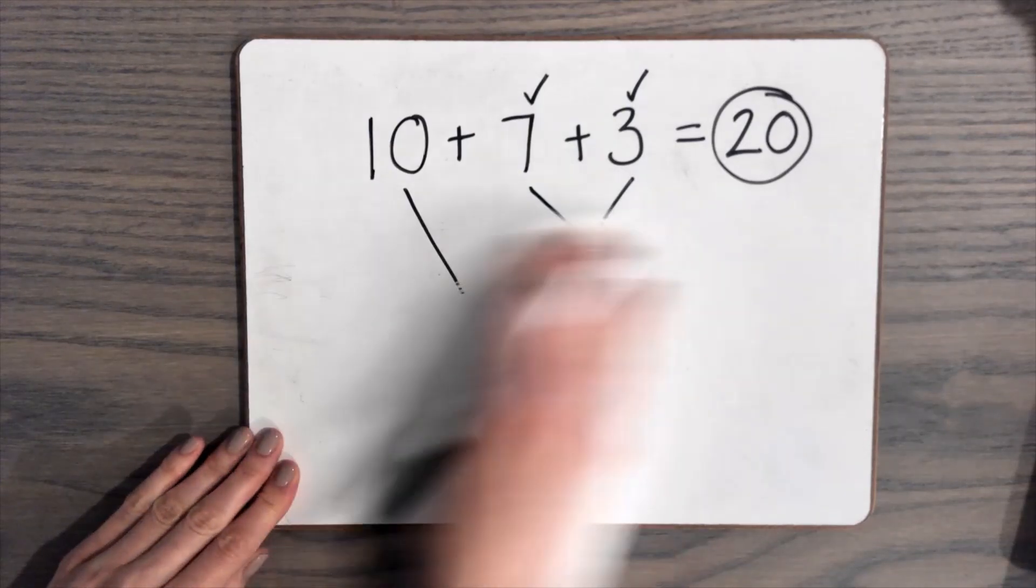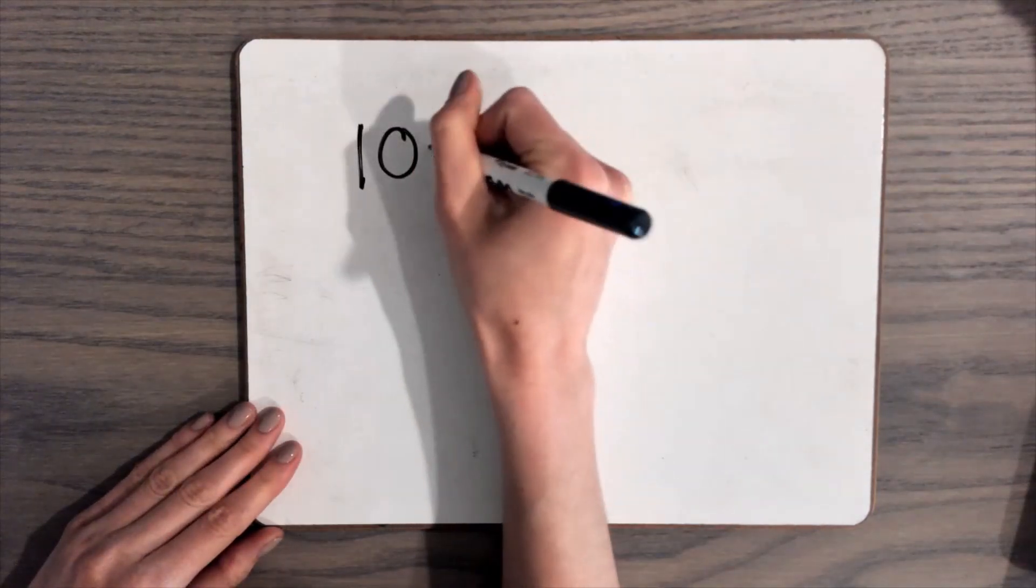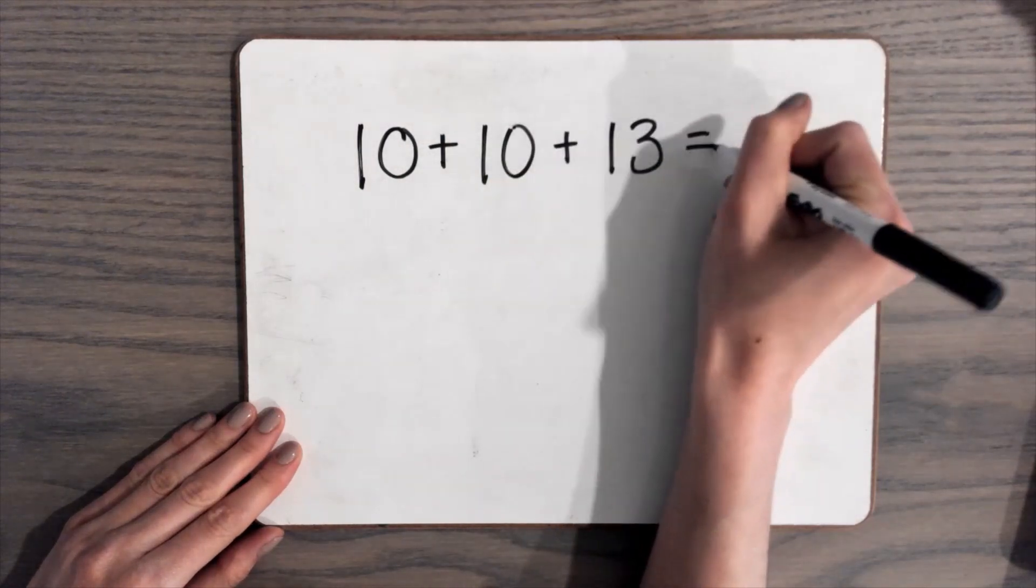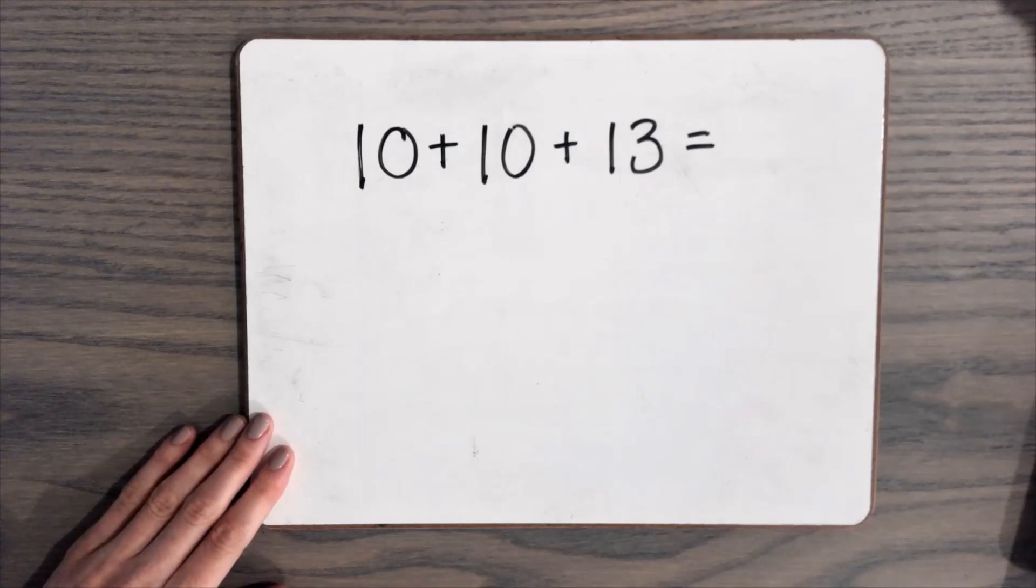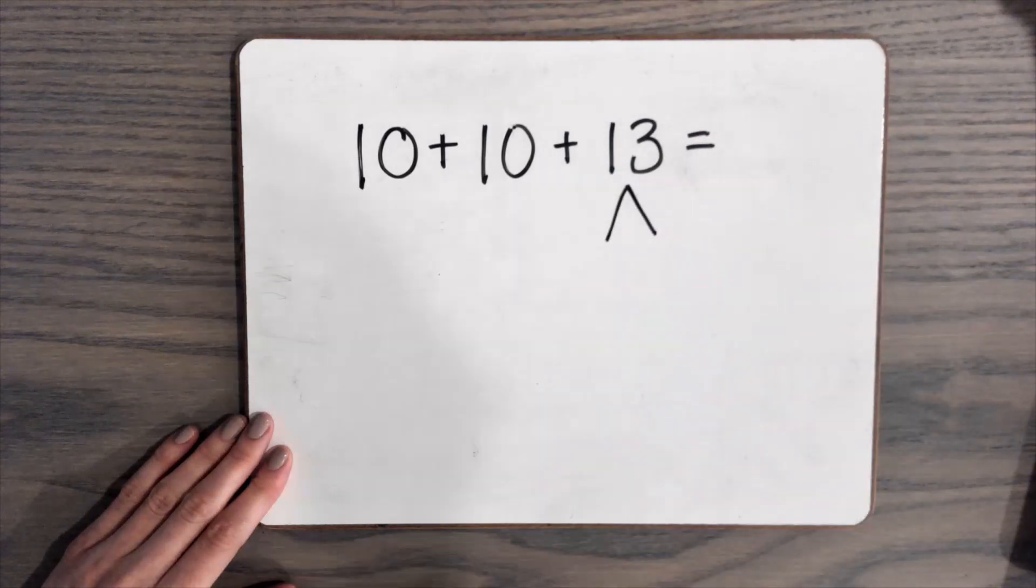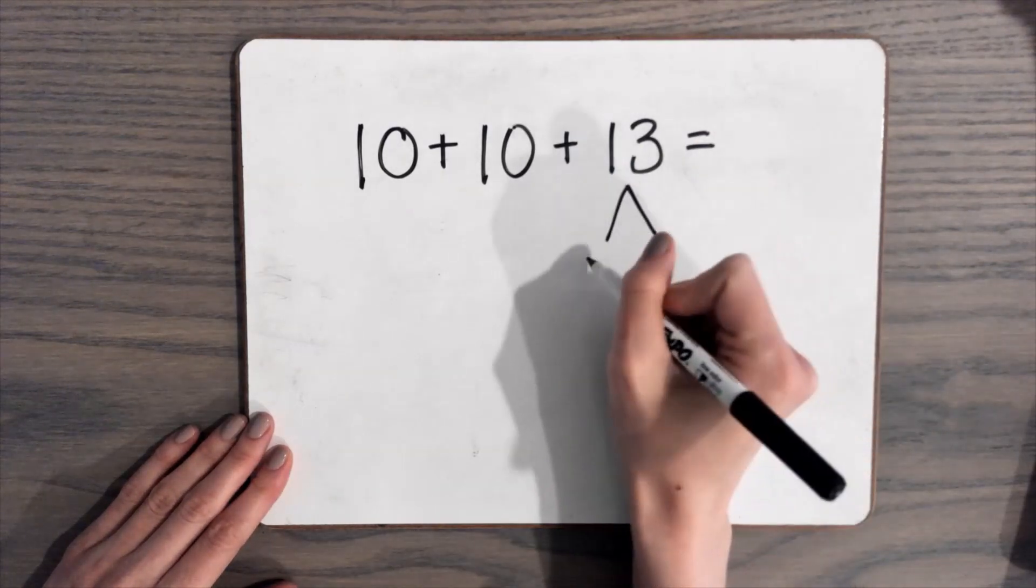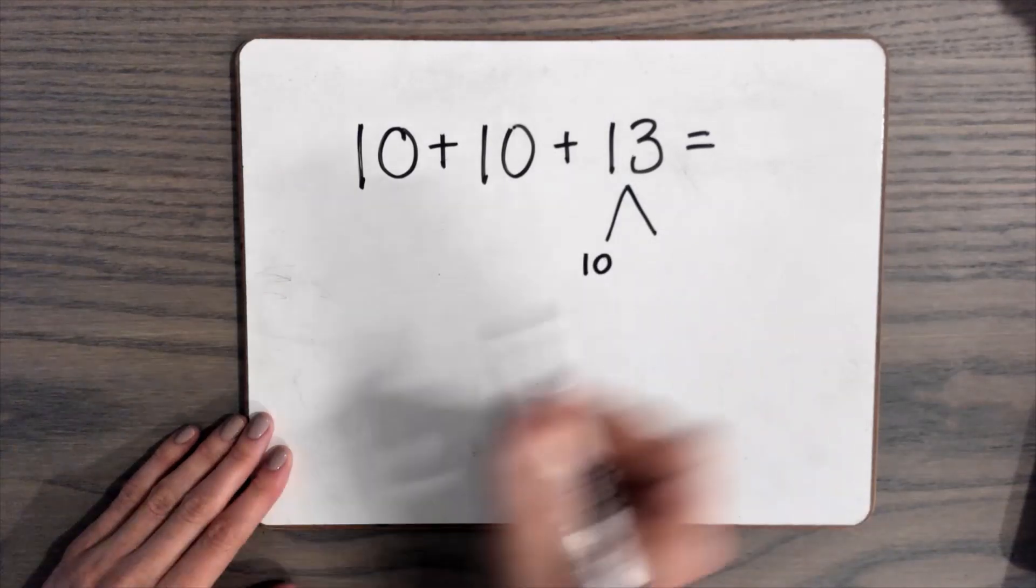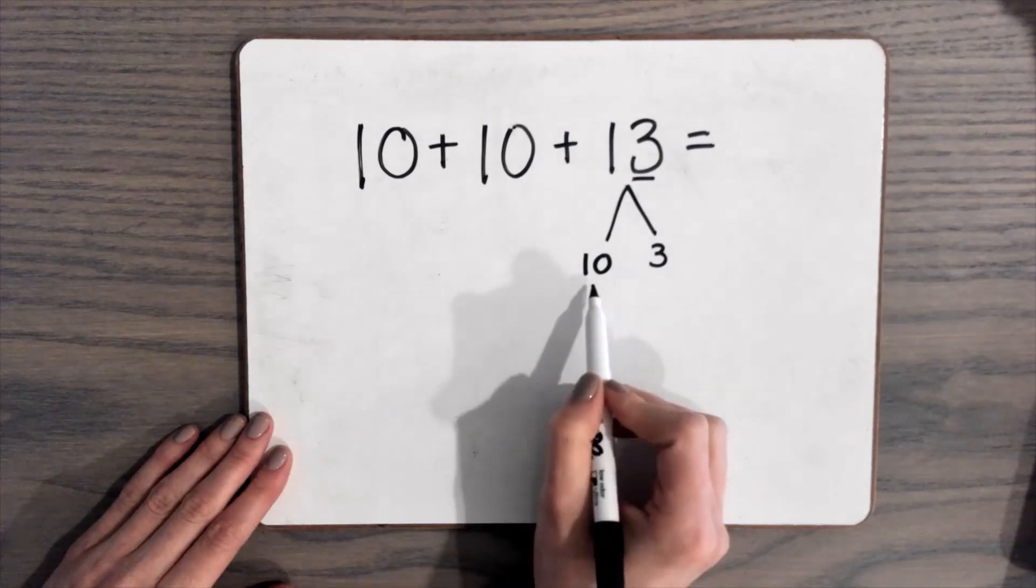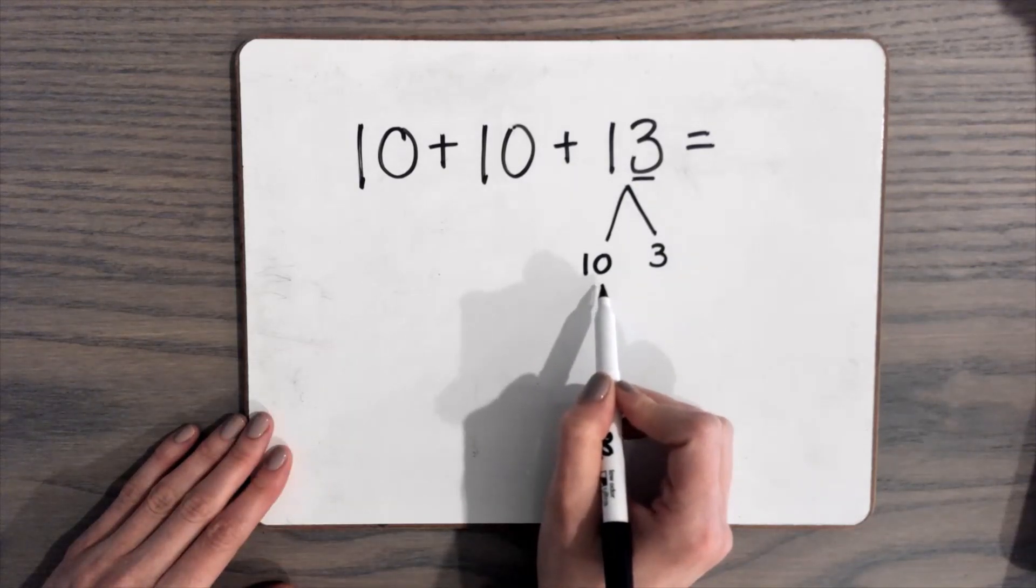And then we're going to do just one more. So now here's an example with a bigger number. There's something you can do to make this easier to solve. One way is breaking this number into 10s and 1s. So 13, we have a 10, and then we have 3.